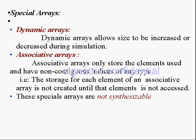For example, array written simply like this — just square brackets, an unspecified one. So during the run time you can increase or decrease the size. That kind of arrays are known as dynamic arrays.